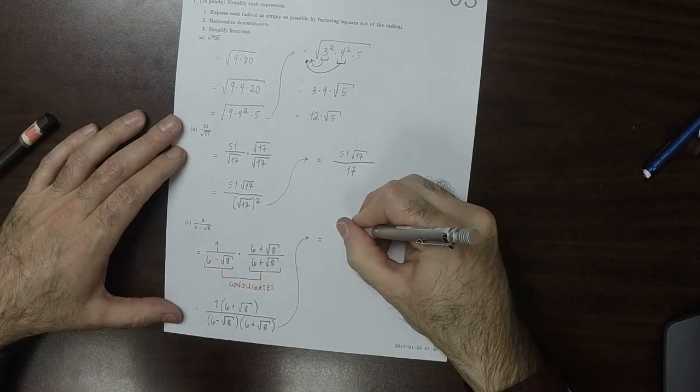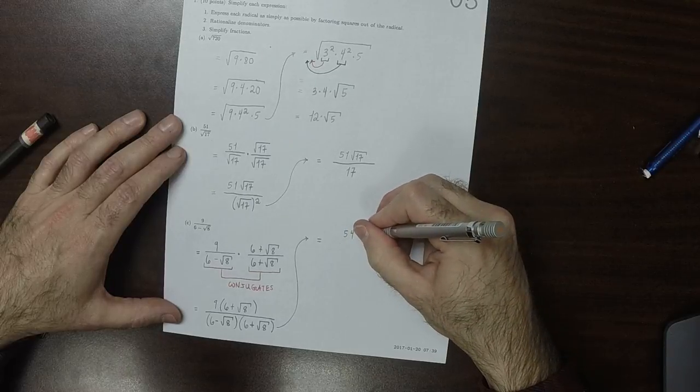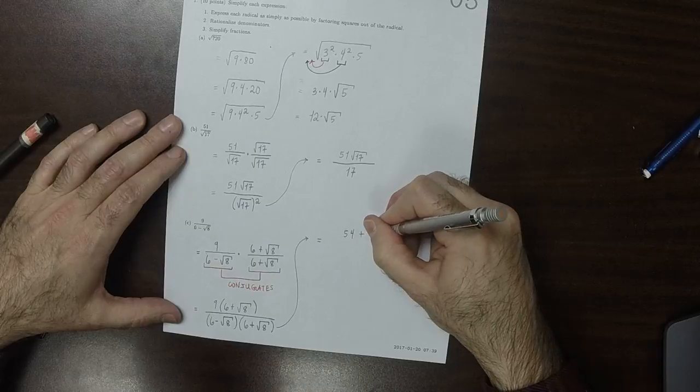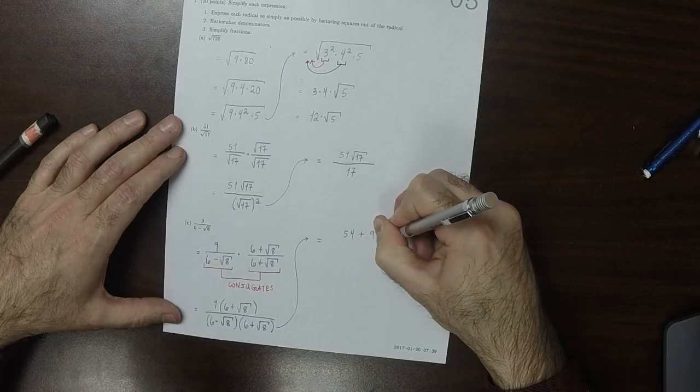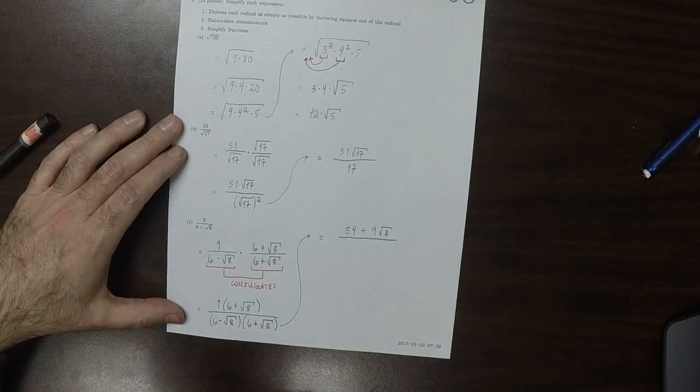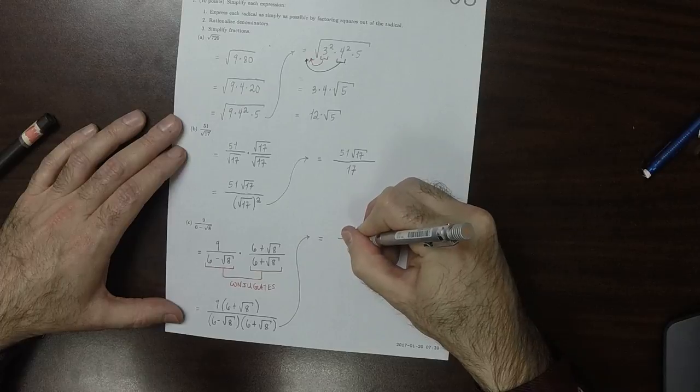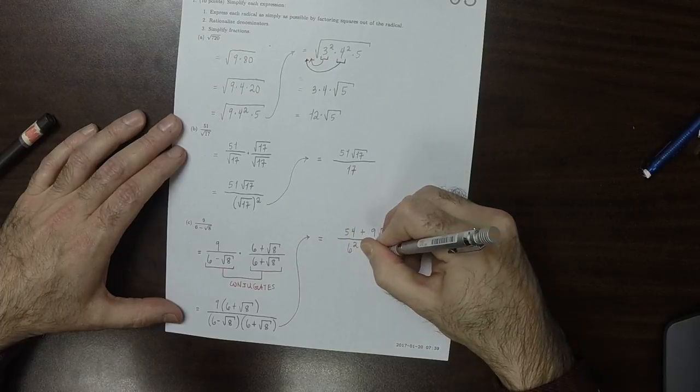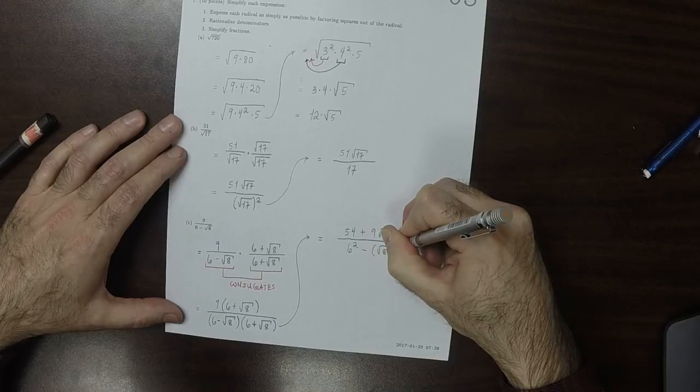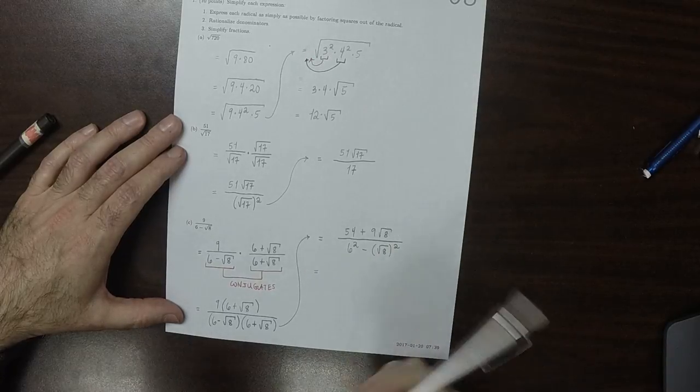And in the numerator, this would be 54 plus 9 square root of 8. And the denominator will become the difference of squares. So that would be 6 squared minus square root of 8 squared.